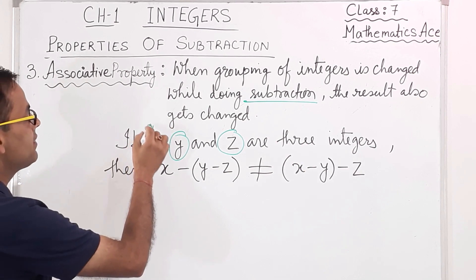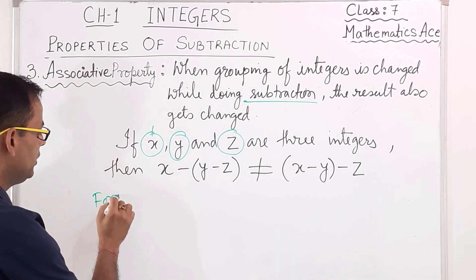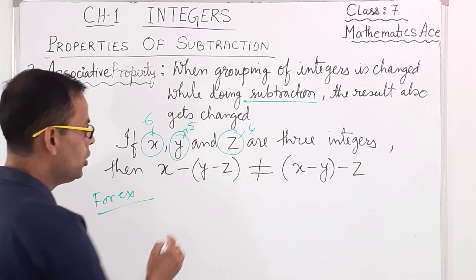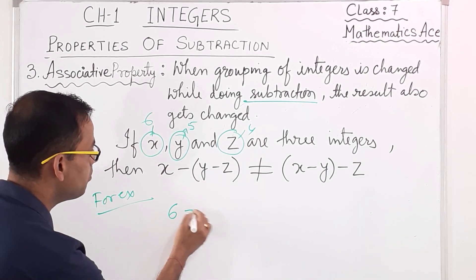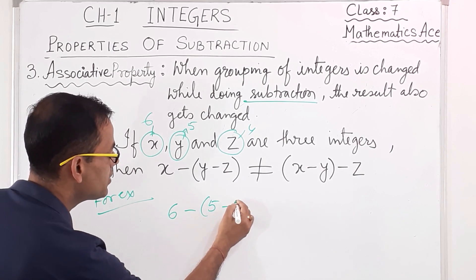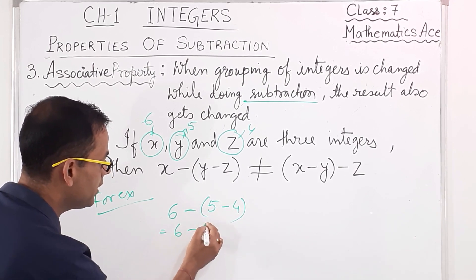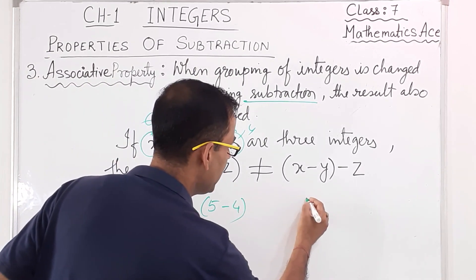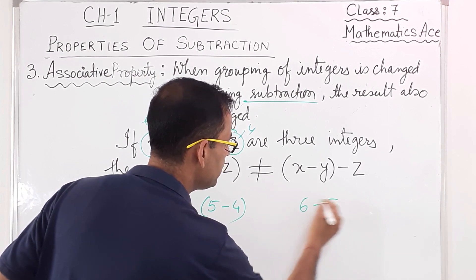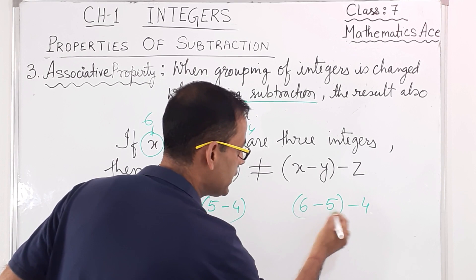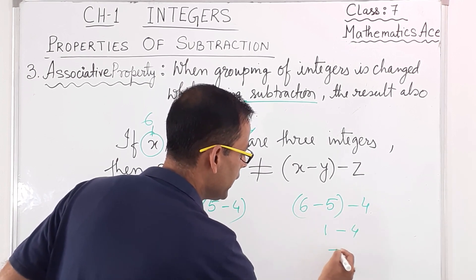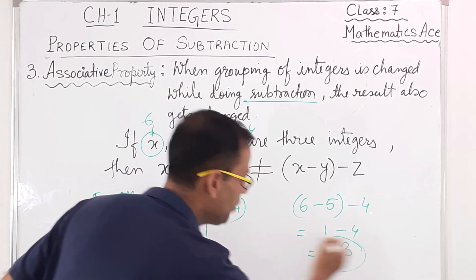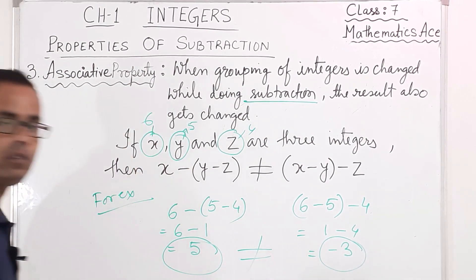For example, take X as 6, Y as 5, and Z as 4. On one side: 6 minus (5 minus 4) equals 6 minus 1, which gives 5. On the other side: (6 minus 5) minus 4 equals 1 minus 4, which gives minus 3. So the two results — 5 and minus 3 — are not equal, confirming associative property does not hold for subtraction.